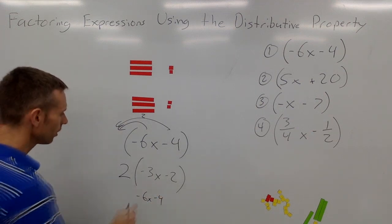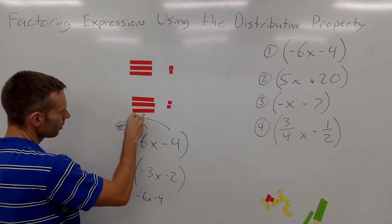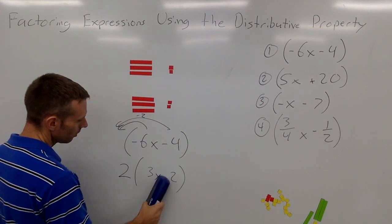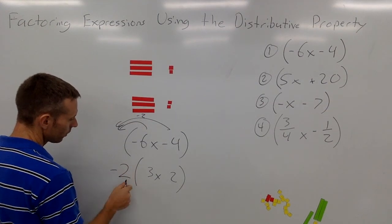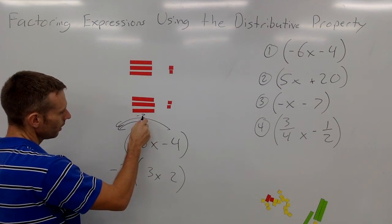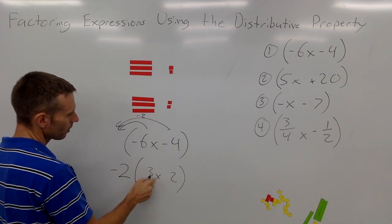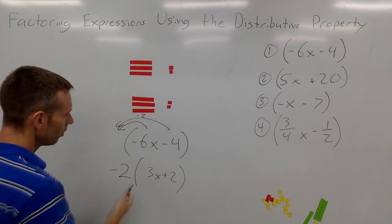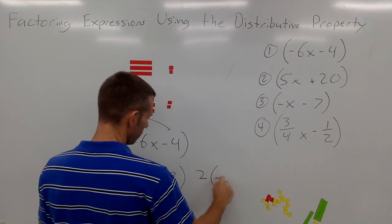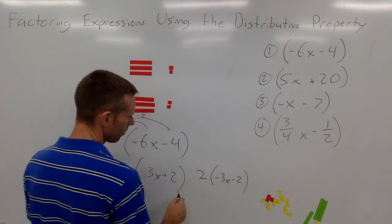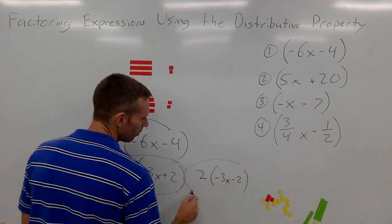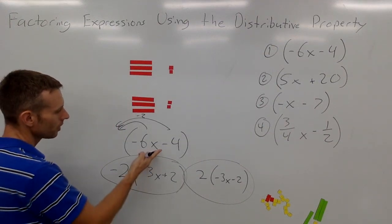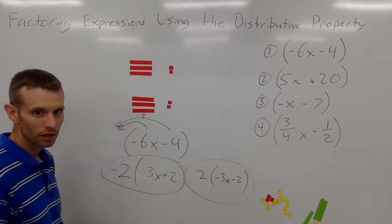Another thing I could notice is I can see there's a negative in both of these, so actually I can factor out a negative 2. If I factor out a negative 2, then negative 6x divided by negative 2 gives us positive 3x, and negative 4 divided by negative 2 gives positive 2. All three of those ways of writing this are basically equivalent — they're equal. There are cases as we go to solve problems where we would prefer to see it in expanded form and then prefer to see it factored out.